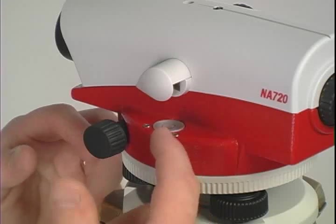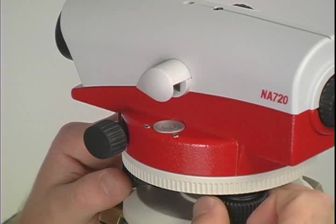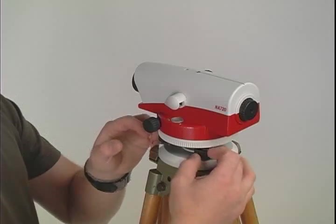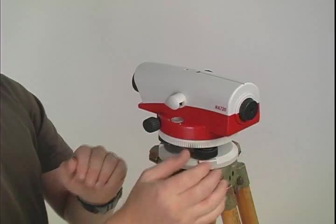Now what I have to do is move the circular bubble in the center by rotating the foot screws. So I move one of these two screws to move the bubble in this direction or the direction of the telescope.